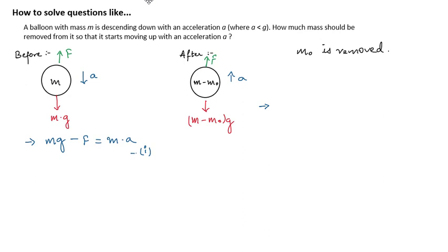In the second case, F is the greater force because acceleration is in the direction of F, not in the direction of (m minus m₀)g. So F minus (m minus m₀) times g is equal to the net force, which is a times (m minus m₀). This is our second equation, and we need to calculate m₀.